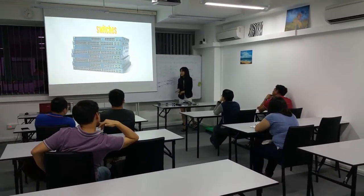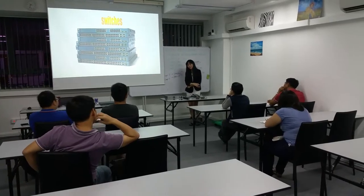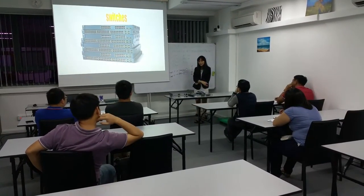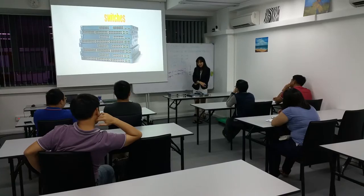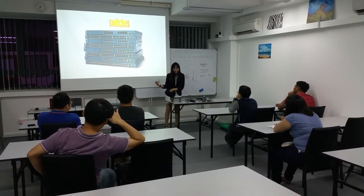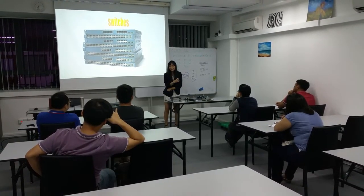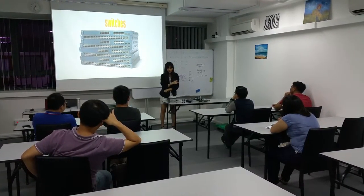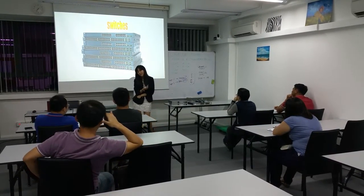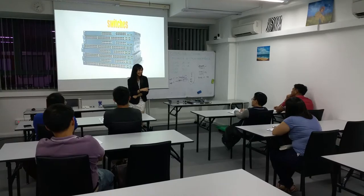Switches — you can purchase gigabit or fast ethernet. Of course, the gigabit will be more expensive and fast ethernet will be cheaper. How do you know if it's gigabit or fast ethernet? When you plug in the LAN cable on your PC, if you see 100 Mbps, that's fast ethernet. If you happen to see 1 Gbps, that's a gigabit switch.